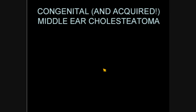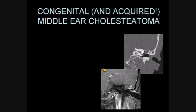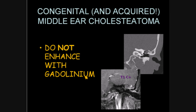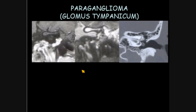Both congenital and acquired middle ear cholesteatomas are characterized by MRI scan as they do not enhance with gadolinium. If there's a question about a middle ear lesion, an MRI will often be helpful for that very reason.